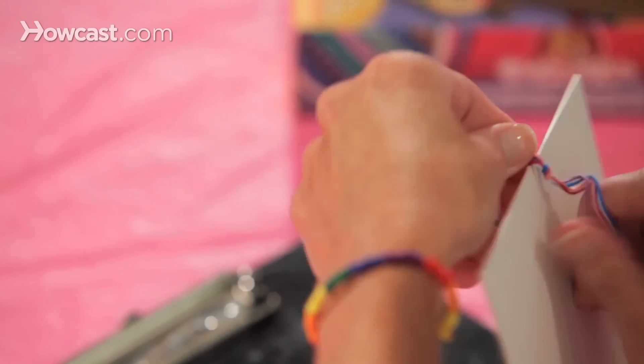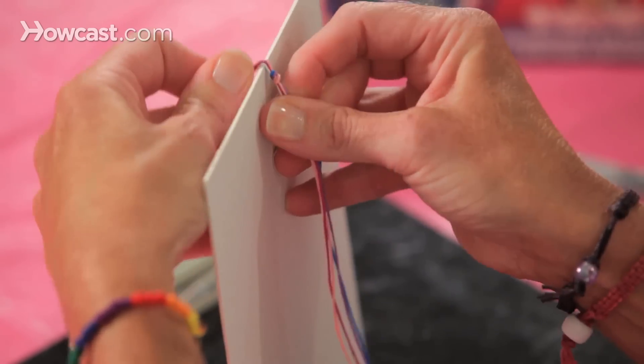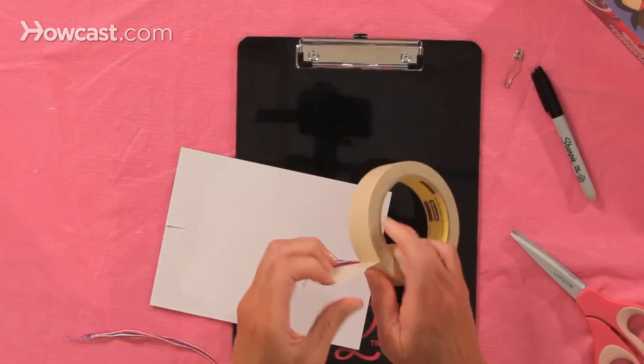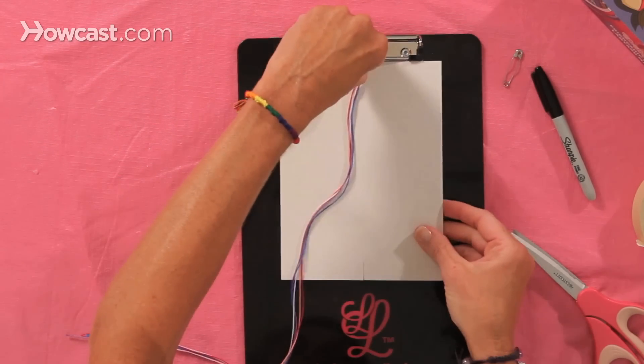Put a slit at the top and a slit at the bottom, and we'll tape the knot in the back so it doesn't slide out as we're making our bracelet, and we attach it to the clipboard.